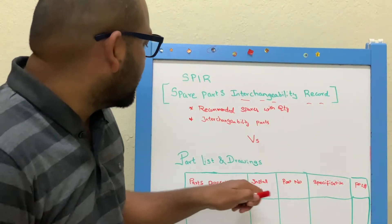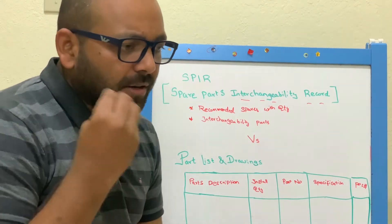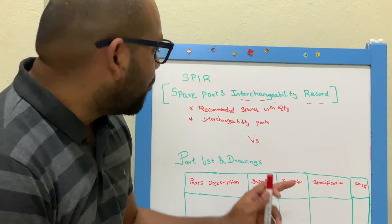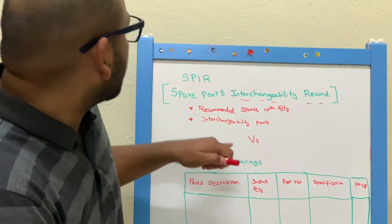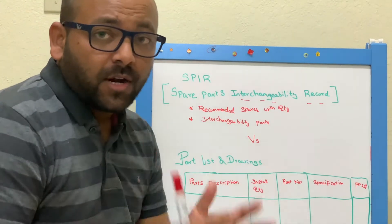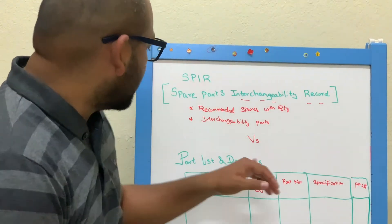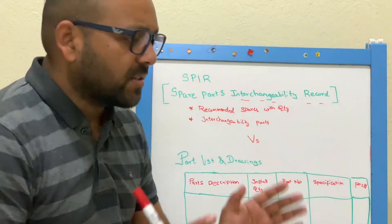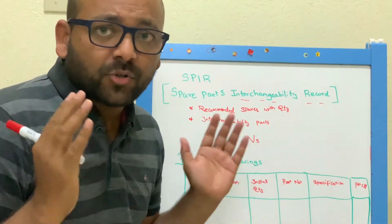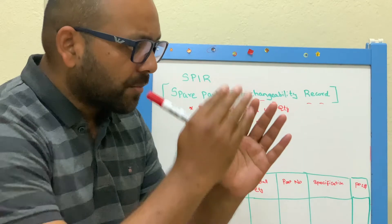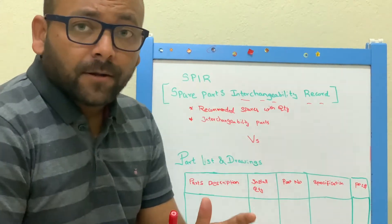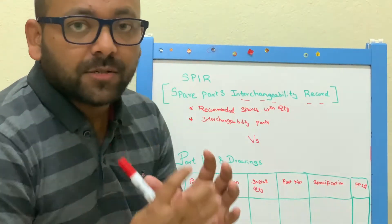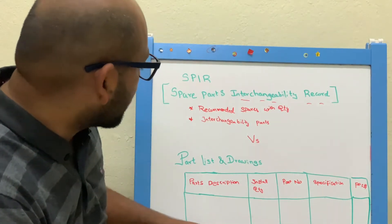It is very easy to review and you can identify what parts are mapped in the drawings. For example, if you are looking at pump drawings, you can find a large part list — casings, impellers, shaft, bearings, and even mechanical seals — all will be listed here.